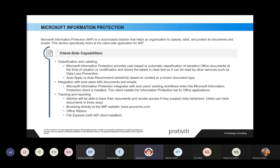On top of that, there's what's called the MIP client or Azure Information Protection client. The MIP client actually allows you to use your labels defined in Microsoft 365 to label content that isn't in Microsoft 365. So if you have file shares and don't have documents in SharePoint, Teams, or OneDrive, you can actually label documents on your file shares using the sensitivity labels you've deployed into Microsoft 365. You do have the ability to go beyond just Microsoft 365.